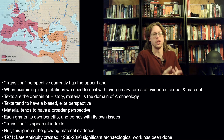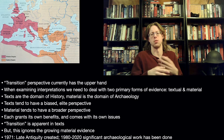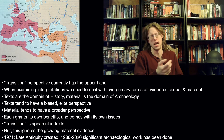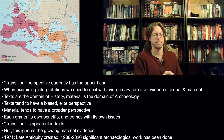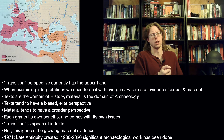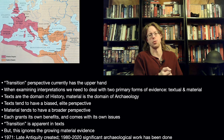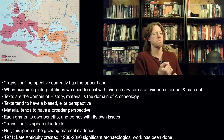When examining interpretations here, we have to deal with the two primary forms of evidence we have for the past. We have textual evidence and we have material evidence. If you want to be really purist, texts are the domain of history, and material is the domain of archaeology. History is its own discipline in America where I live; archaeology, technically, is part of anthropology. In Europe it's a little different. The texts, as a rule, tend to have a biased elite perspective for most of the human record — not all of it, but for most of it.